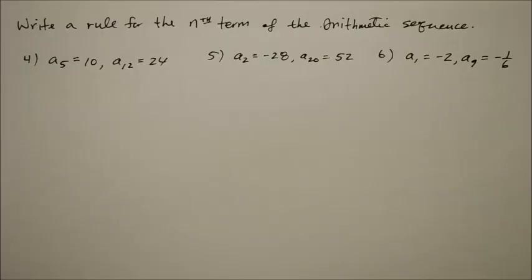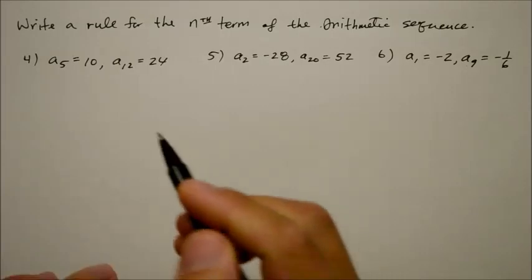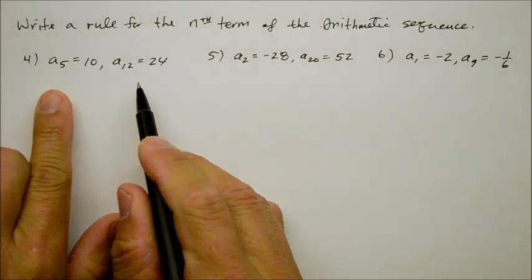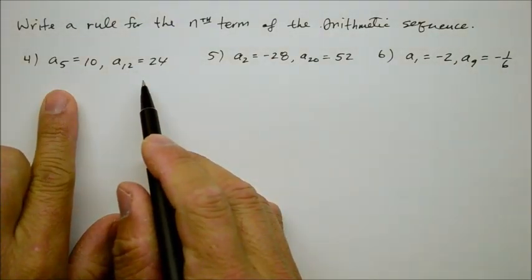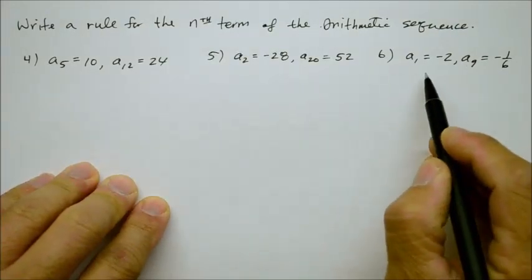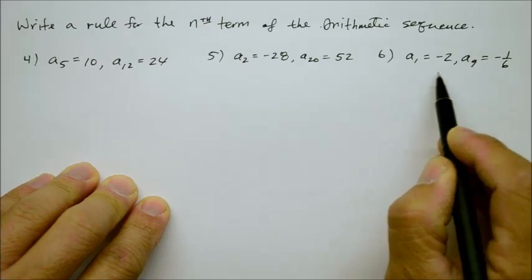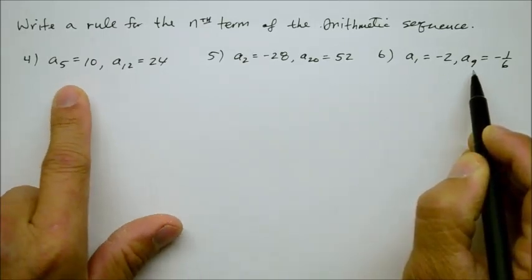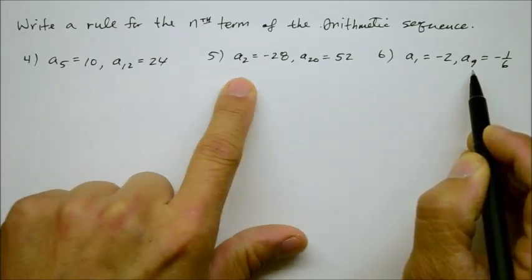Now that we know how to write the rule for the arithmetic sequence when given a set of numbers, how about if we are given the two positions of the sequences of the numbers? Can we still find a rule for that? I realized that this one is going to be quite spicy. So let me do this one for you to give you an idea of how to do numbers 4 and 5.